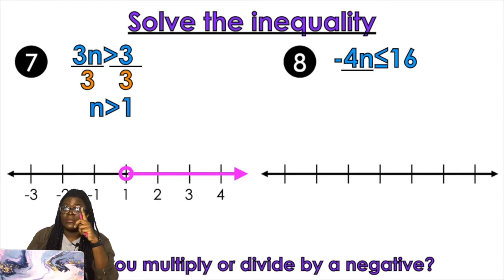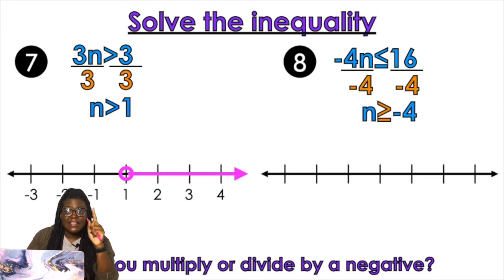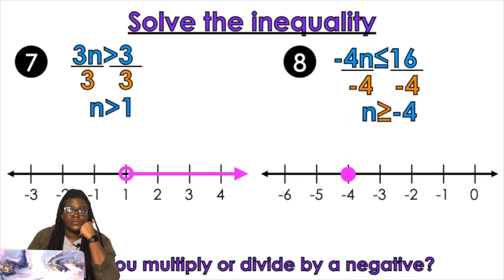Number 8. To get n by itself, I have to divide by negative 4. If I do it on one side, I do it on the other. Did you multiply or divide by a negative? Yes you did. So I have to flip my symbol to make sure the inequality remains true. Instead of n is less than, it's going to be n is greater than. 16 divided by negative 4 is negative 4. Closed circle or open circle? Closed. Left or right? Right.